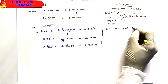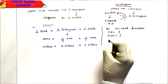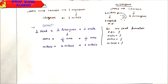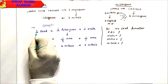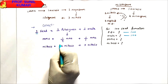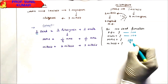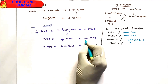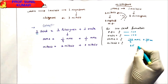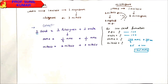Example: For 100 seed formation, how many MMCs are required? For 100 seeds we need 100 pollen grains and 100 ovules. For pollen grains: 100 ÷ 4 = 25 MMCs. For ovules: 100 ÷ 1 = 100 MMCs. Total MMCs required = 25 + 100 = 125 MMCs. It is easy once you understand this simple concept for seed formation.